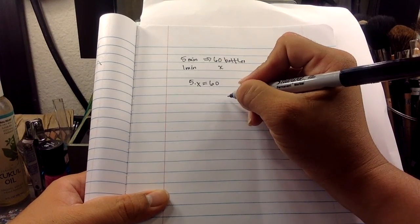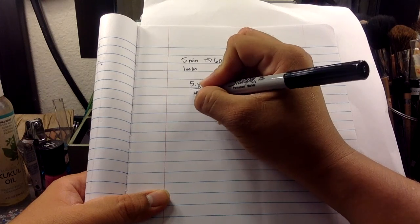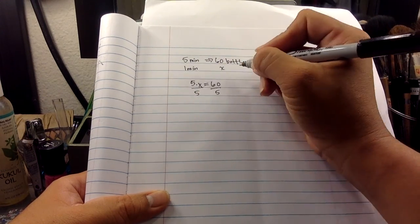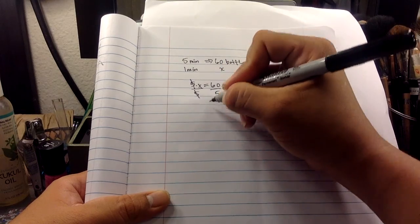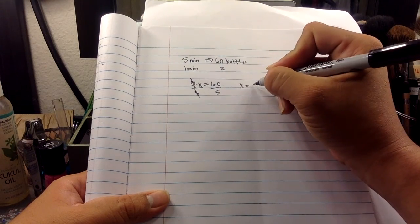So in order to get rid of this five, I simply divide both sides by five, because this seemed to be multiplied. This cancels out that, and so I get x is equal to 12.